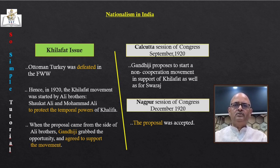Rallies were organized in various cities, workers went on strike in railway workshops, and shops closed down. The protests were particularly intense in Punjab. Mahatma Gandhi was detained while proceeding to Punjab. In Amritsar, martial law was imposed and General Dyer was given the command.